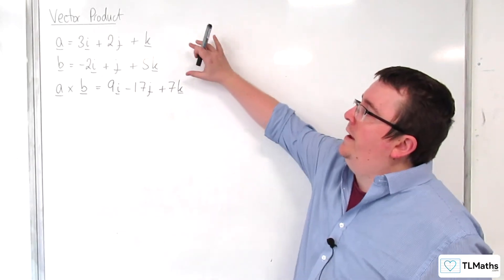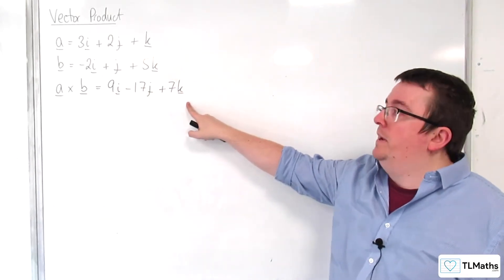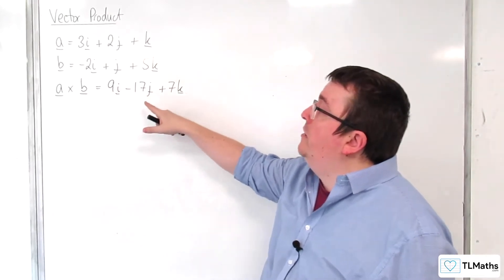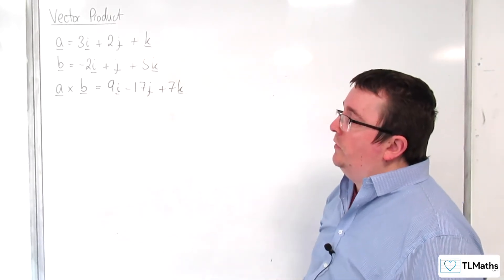So, in the previous video, we had A and B, and we found the cross product of A and B. A cross B is 9i, take away 17j, plus 7k. So, that was one of the results from the previous video.